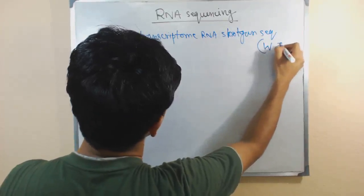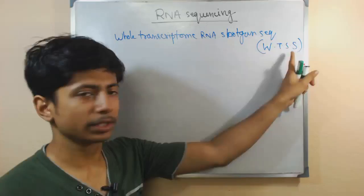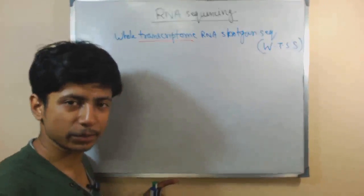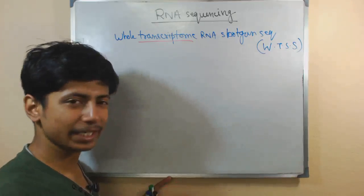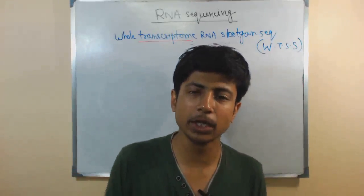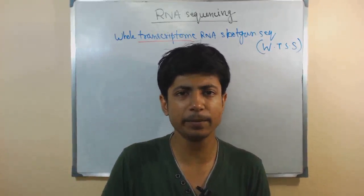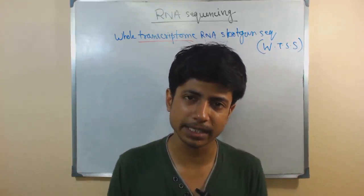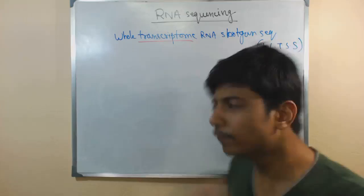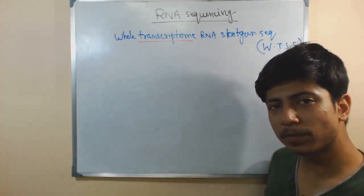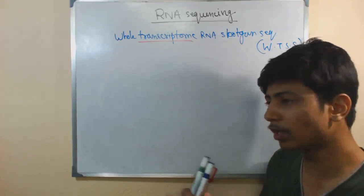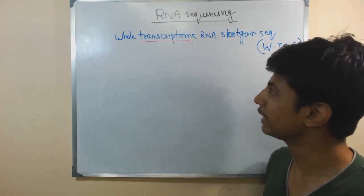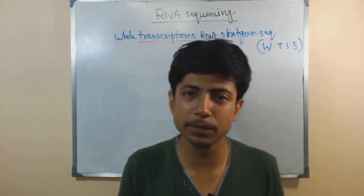WTSS stands for whole transcriptome shotgun sequencing. What is the transcriptome? We have already talked about it — if you don't know what it is, you can go back to my channel and find a video about transcriptome. Transcriptome means all the content of RNA present in a cell: every bit of mRNA, tRNA, rRNA, non-coding RNA, degraded RNA — whatever RNA content is present inside the cell altogether is termed as the transcriptome. If we need to sequence all of them, we take all the transcriptome of the cell and sequence every single piece of RNA to get the detailed picture of RNA inside the cell.